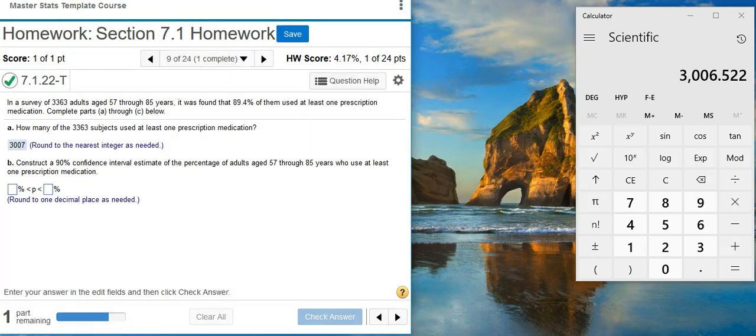Now Part B asks us to construct a 90% confidence interval estimate of the percentage of adults aged 57 through 85 years who use at least one prescription medication.